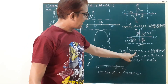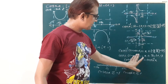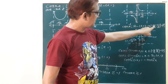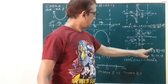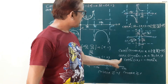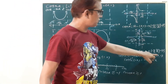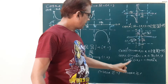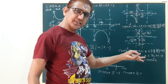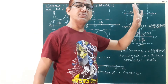Now, cosecant inverse of cosecant x equals x, when x belongs to the range of cosecant inverse, which is the closed interval minus pi by 2 to pi by 2, minus {0}. And cosecant of cosecant inverse x equals x, when x belongs to the co-domain ℝ minus the open interval minus 1 to 1. And the last formula: cosecant inverse of minus x equals minus cosecant inverse x.